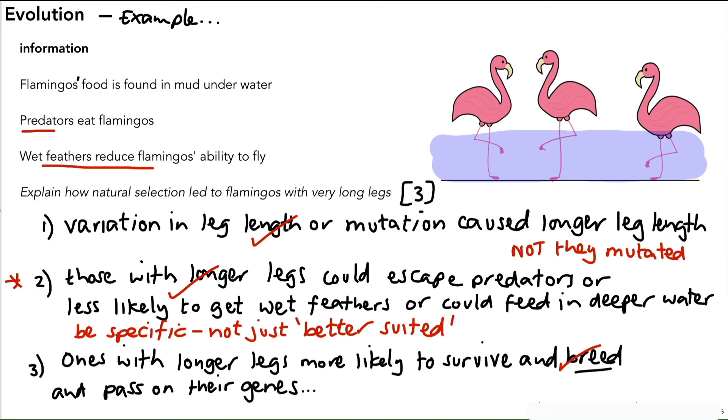So that's evolution by natural selection. We've gone through it in a general way and we've gone through a specific example, so hopefully that all made sense. That's the end of this video and I'll see you in the next one.